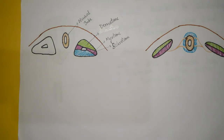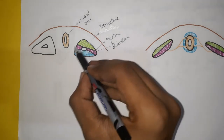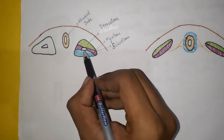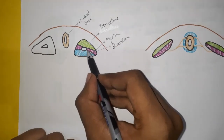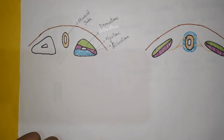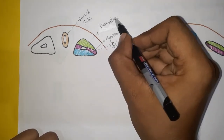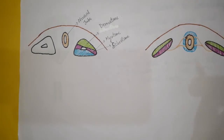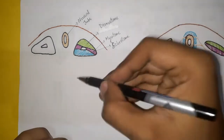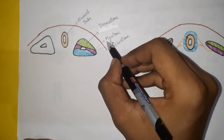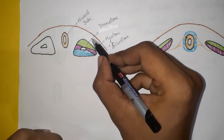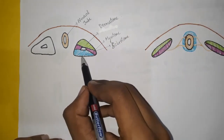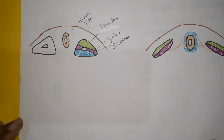The mesodermal somite is divided into three parts. In cross section it is triangular with a cavity inside. The lateral-most part is called the dermatome — 'derma' relates to skin, that is why it is on the outside. The middle layer is the myotome — 'myo' relates to muscle. And finally the ventromedial part is the sclerotome.